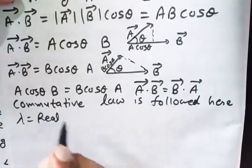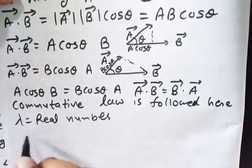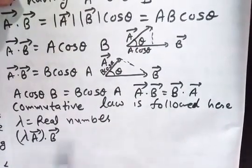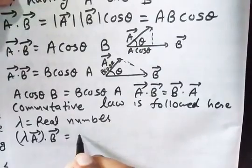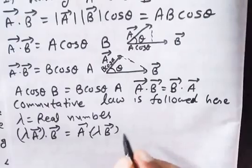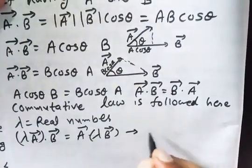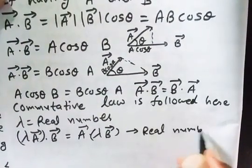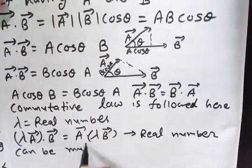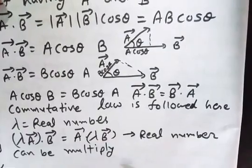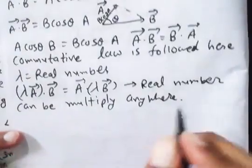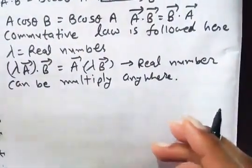So commutative law is followed here. Now after following this law, if I multiply with lambda, a real number, then what will happen? Lambda times vector A dot vector B - this will be correct, as well as vector A dot lambda times vector B - this will also be correct. So here real number can be multiplied anywhere in our calculation.